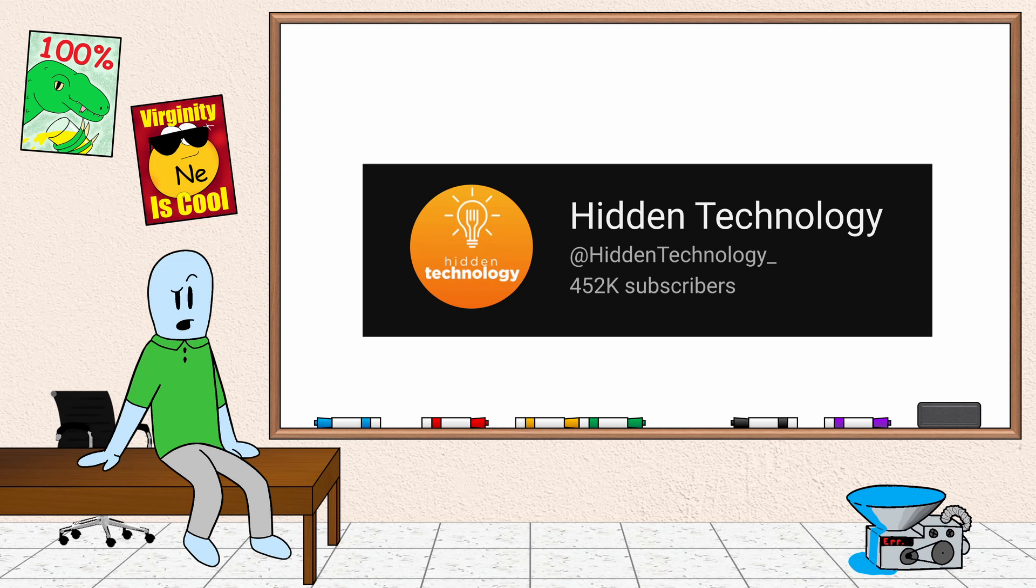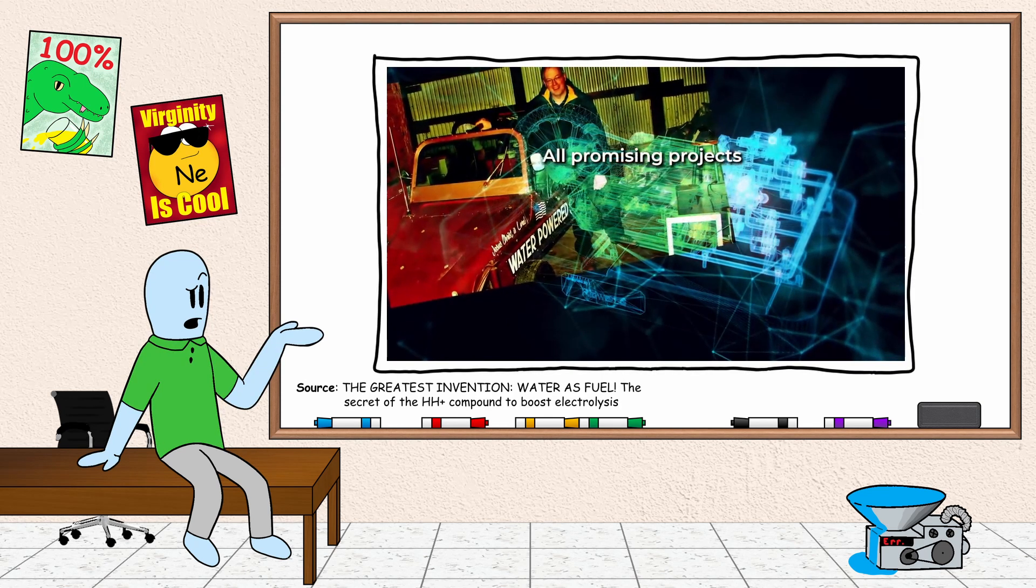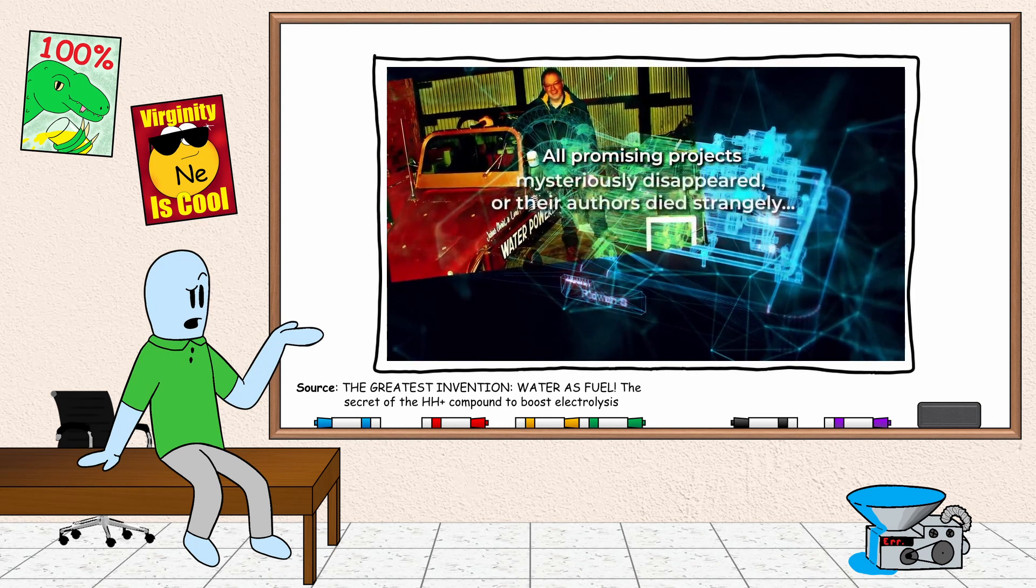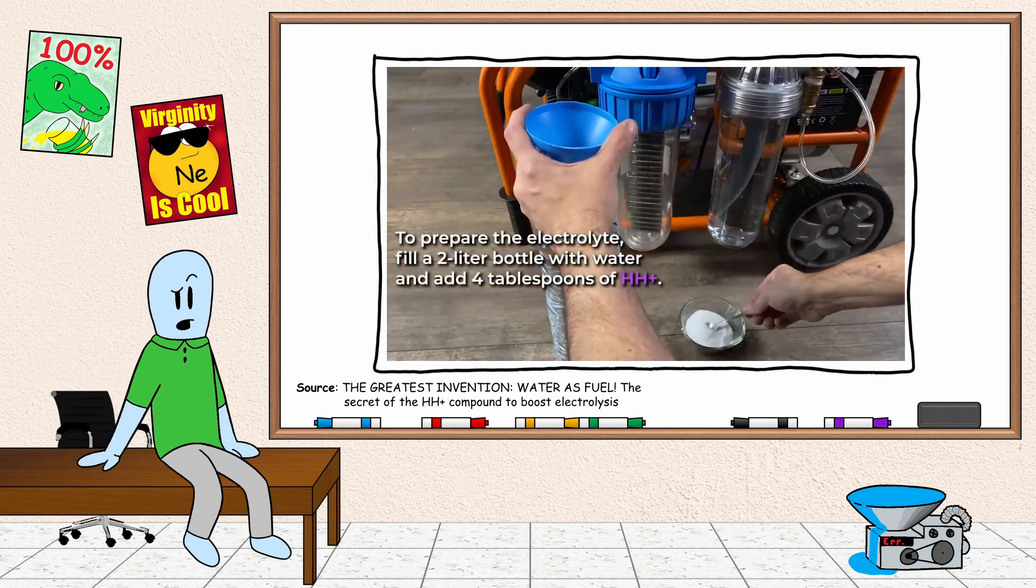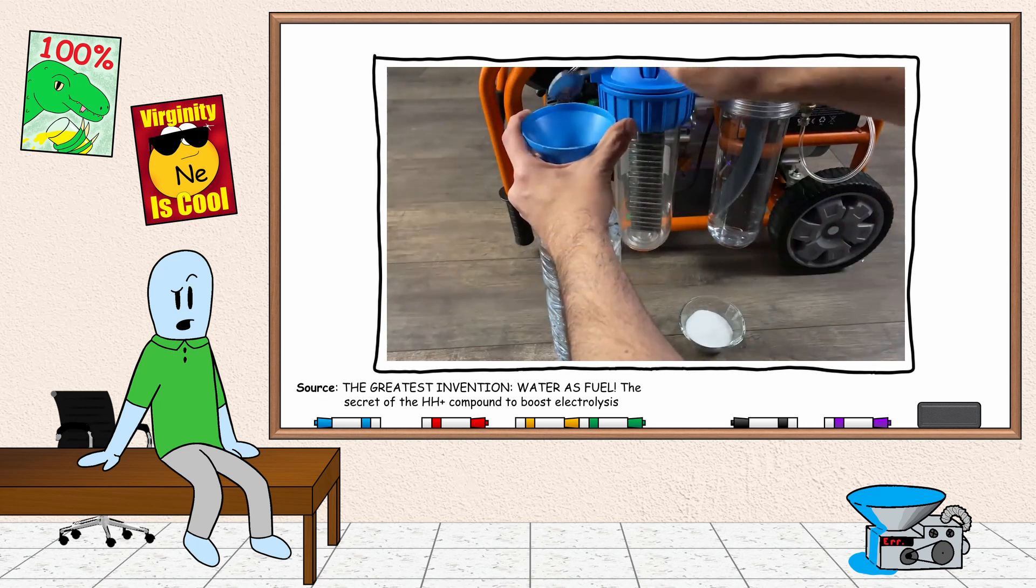They start their water-powered engine video by lending credit to Stanley Meyer and the story of how he mysteriously disappeared. They also claim that the secret to making this water-powered engine work is an unnamed powder that helps split the water.